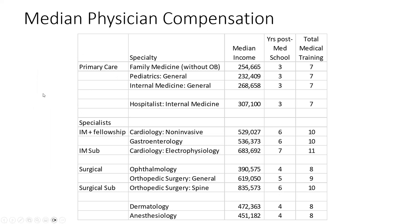To give you a flavor of why physicians choose the paths they choose — looking at different specialties, you can see how much they earn as well as how many years post-medical school the training takes. For example, family medicine takes three years post-medical school — seven total — and earns about $250,000 median. Pediatrics, family medicine, and internal medicine are all about the same amount of training in the same pay ballpark. This is median — about half make more, half make less.